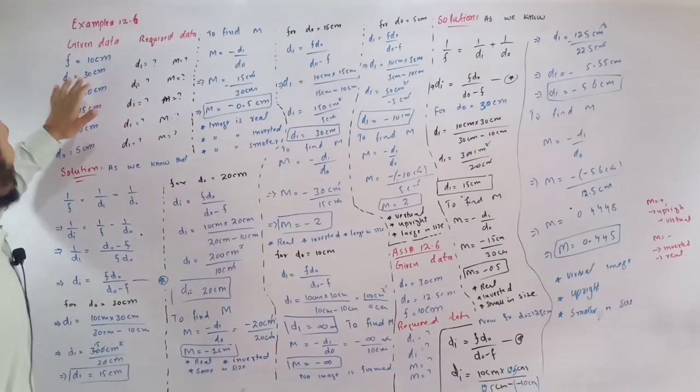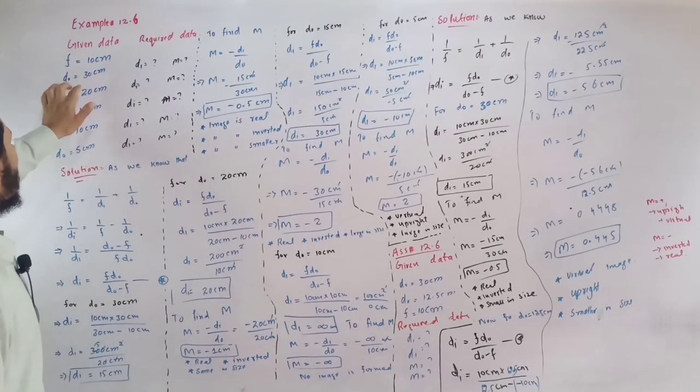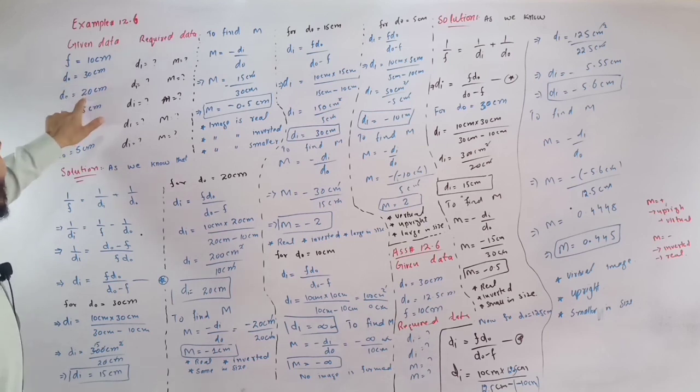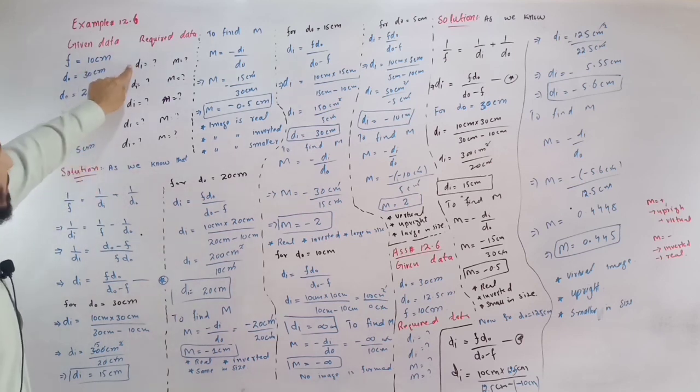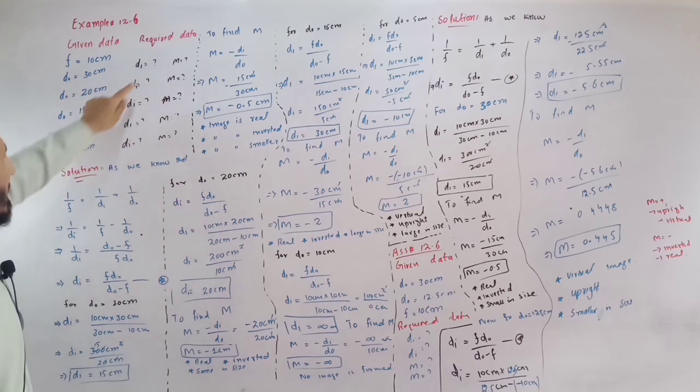By giving data, we have focal length f equals 10 cm, d0 equals 30, 20, 15, 10, or 5 cm. Here is the required data: di and m. 1 over di minus 1 over d0.